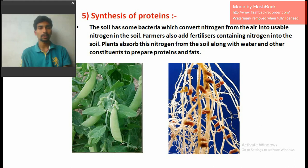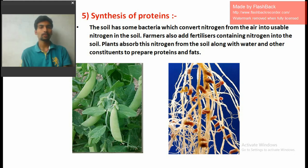In addition to this, farmers and fertilizers — such as urea — provide nitrogen to the plants. Urea is spread over agricultural soil, which fulfills the nitrogen requirements of the plants.